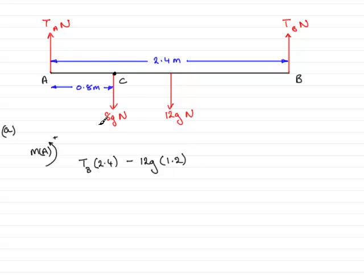Next, we have the load here, 8G Newtons. It wants to turn also in a clockwise direction, about A. So, the moment will be the force, 8G times 0.8. So, that would be minus 8G multiplied by 0.8.